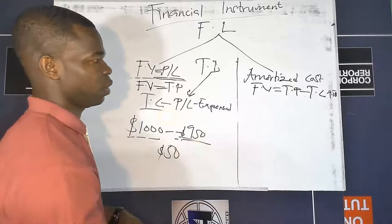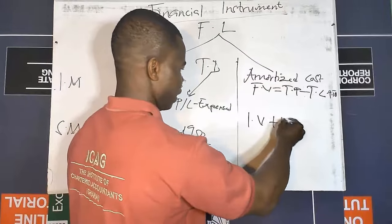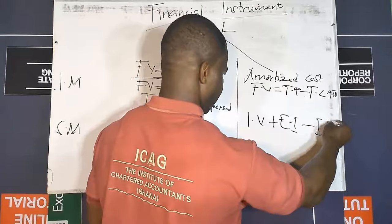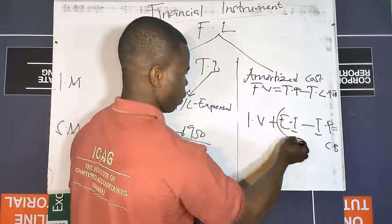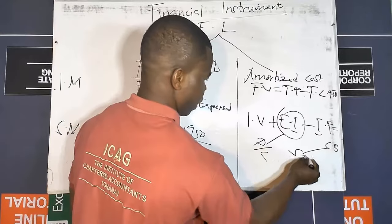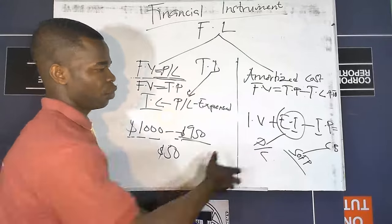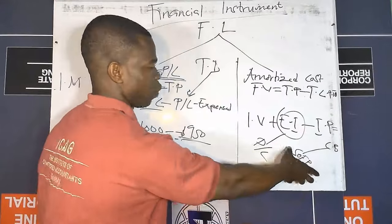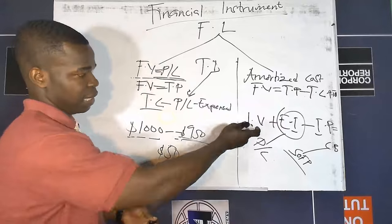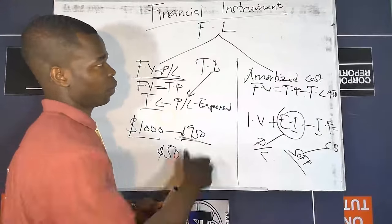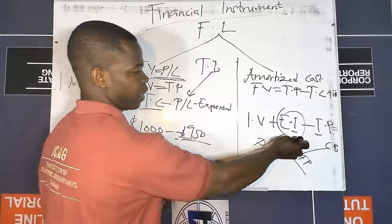For the subsequent measurement of financial liability at amortized cost, we amortize the instrument. The amortization is: initial value plus effective interest, less interest paid, which gives you the closing balance. The effective interest is treated as finance cost in the P&L account, and the closing balance is sent to the statement of financial position. We will look at how to prepare this amortization schedule and obtain the values for effective interest, interest paid, and closing balance.